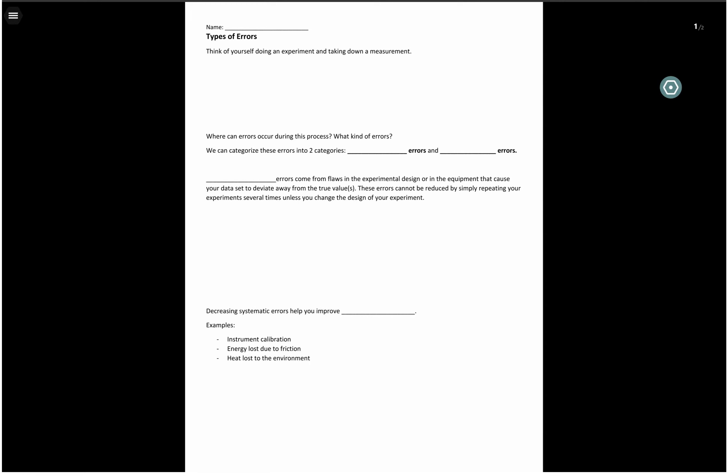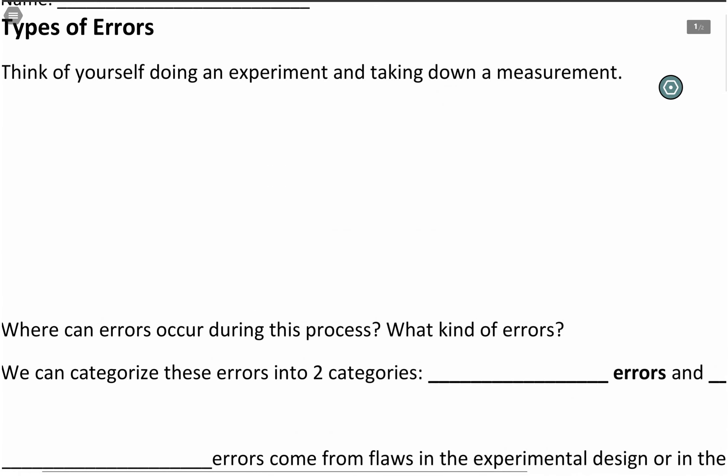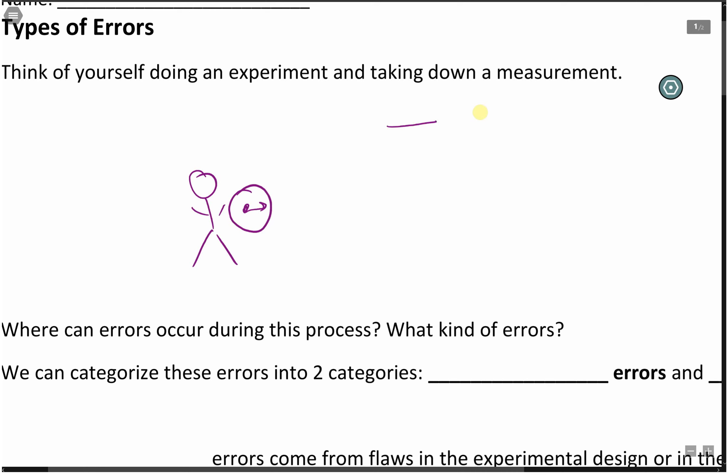When I think of an experiment, I like to break the experiment into three pieces where errors could happen. So we're going to think of yourself doing an experiment and taking down a measurement. We have yourself, you have a device that is going to measure something, and you have your apparatus, which is what you're trying to measure.